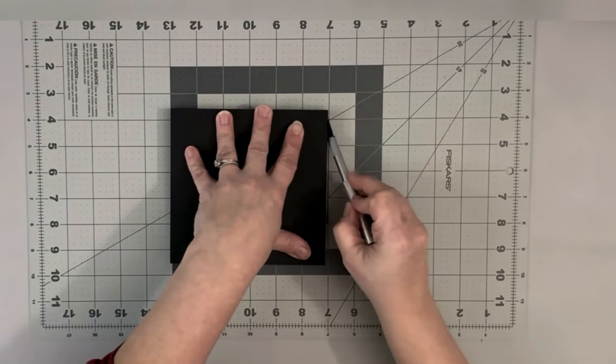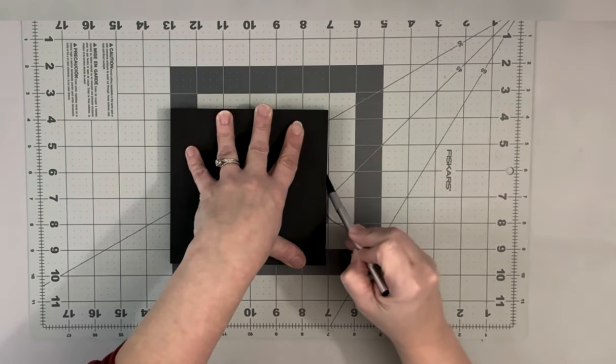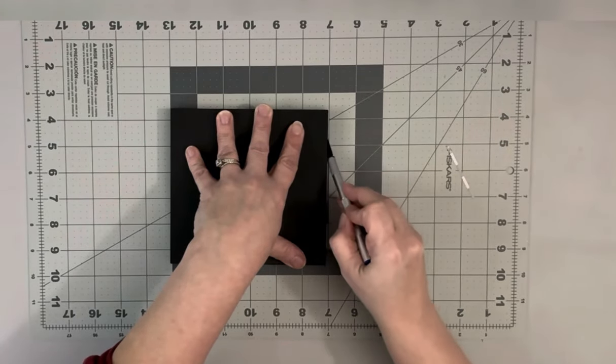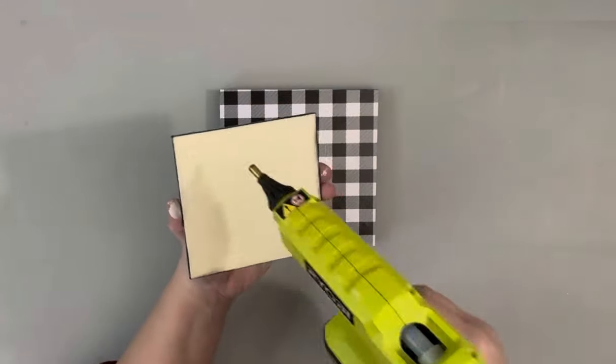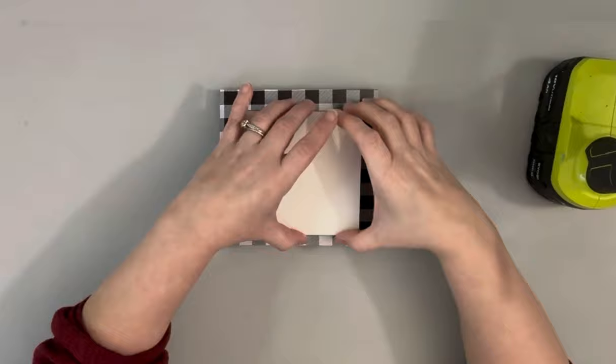I placed the vinyl down and then went around with a razor blade and trimmed any excess around the edge. I hot glued the plank wood piece, getting it as centered as possible on the buffalo check vinyl.